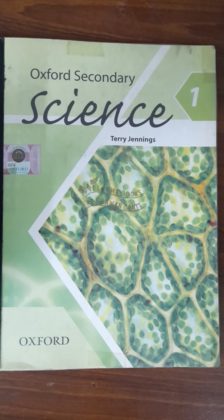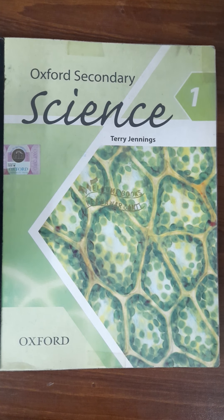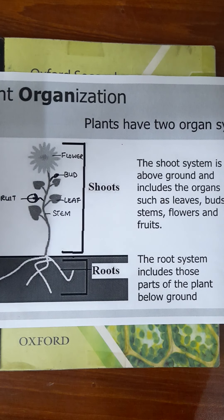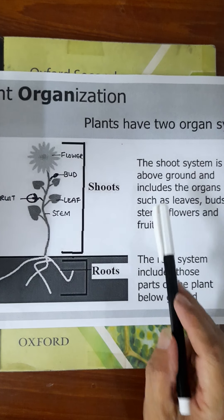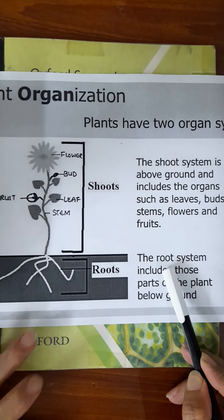Plants are living things. They are also made up of cells, tissues, organs and organ systems. A typical plant has two systems. Number 1, the shoot system. Number 2, the root system.